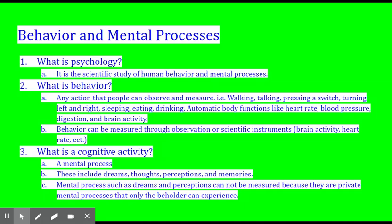Behavior and mental processes are different. Behavior is any action that people can observe and measure, like walking, talking, pressing a switch, turning a light on and off, turning left or right, sleeping, eating, or drinking. Automatic body functions like heart rate, blood pressure, digestion, and brain activity are also things that can be measured. Behavior is measured through observation or scientific instruments, such as brain activity and heart rate. Your heart rate can be monitored by a machine — some of us even have heart rate monitors on our watches. Brain activity can be measured through MRIs, PET scans, and CAT scans.